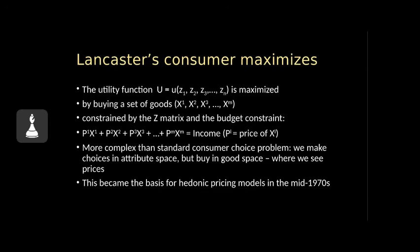The Lancaster approach became very important in a subsequent development in empirical economics called hedonic pricing. The classic example is the housing market, where we examine a set of houses by their intrinsic characteristics — size, decoration, square footage — as well as the extrinsic characteristics of location and local amenities. By comparing across a number of possible houses to buy or rent, we make a choice based on some weighted understanding, a weighted utility, of the attributes of the property we prefer.